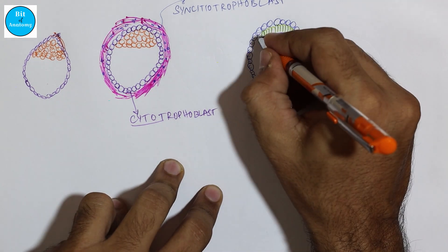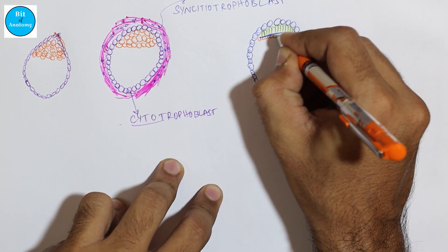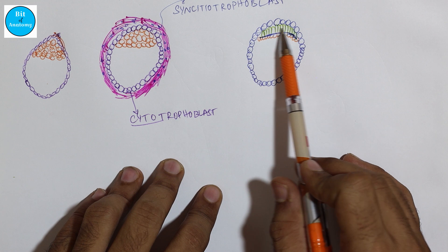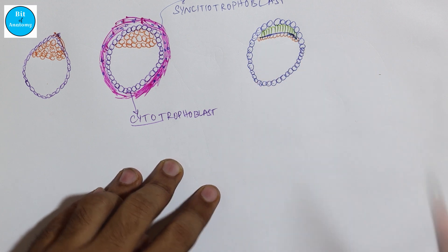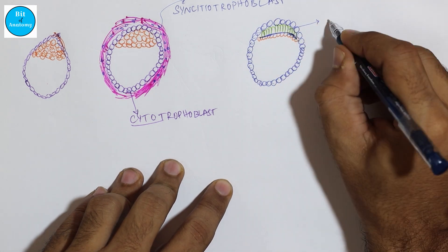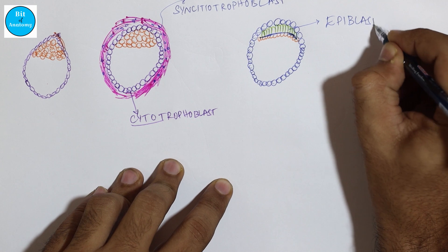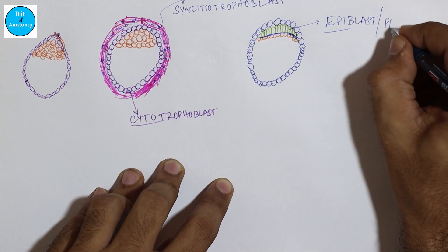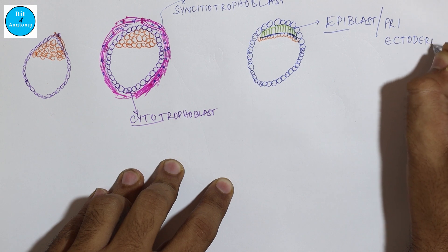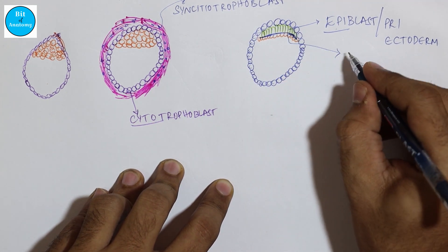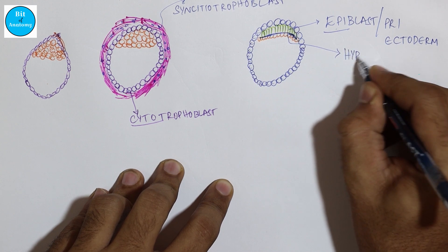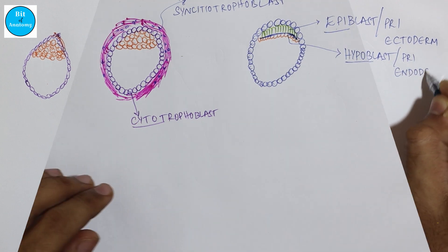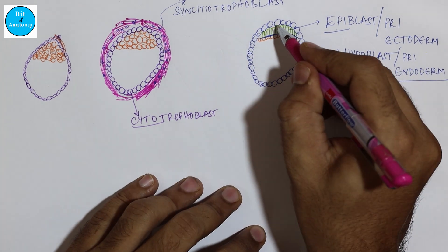In the lower part, there is presence of cuboidal cells. So instead of a mass of cells, we are seeing differentiation into an upper layer of columnar cells and a lower layer of cuboidal cells. The upper layer of columnar cells forms what is called the epiblast layer — 'epi' means above — so it is also called primary ectoderm. The lower cuboidal cells are called the hypoblast, or also known as primary endoderm.